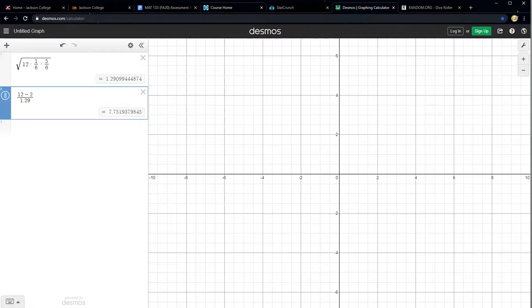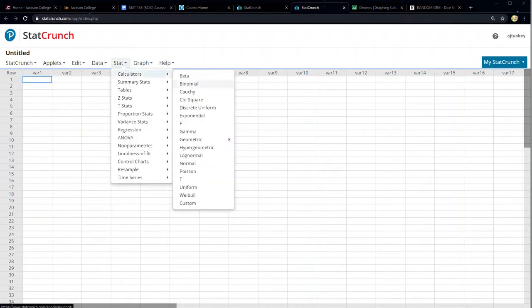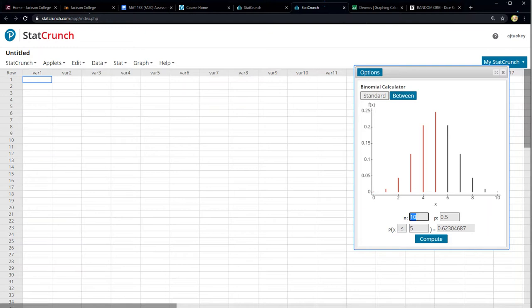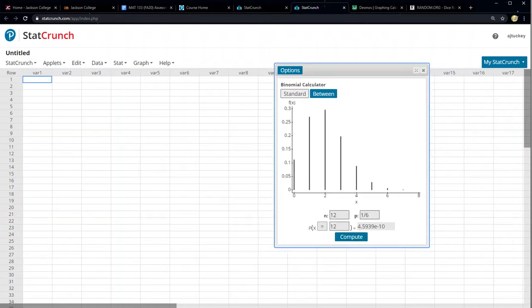If we look at it in StatCrunch we would go to stat calculators and you choose binomial. You click binomial and then we would say n is 12, p was 1/6, and then I want the probability that x equals 12. And there you can see 4.59 e-10. It's so small it's off the screen because there's no dots to even draw.